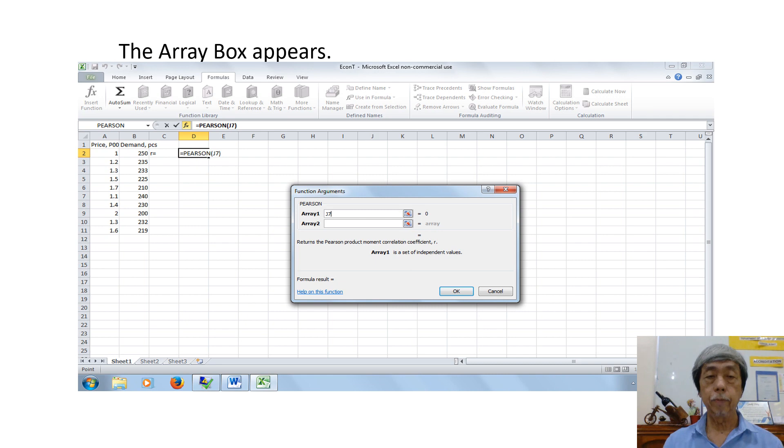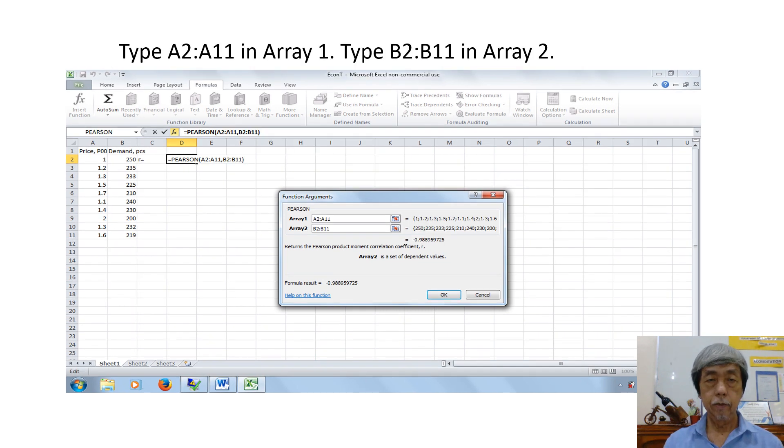The array box appears. Type A2 colon A11 in array 1. Type B2 colon B11 in array 2.